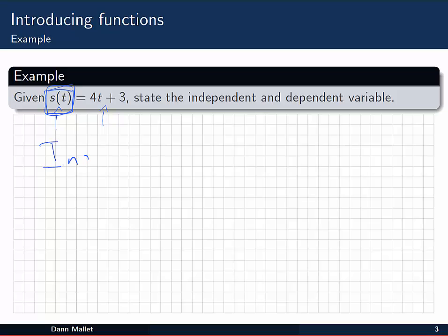So we can say that the independent variable is t—it's the one that can vary freely. And the dependent variable, which is the one which has a value that depends on the independent variable, that's s.